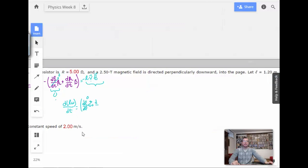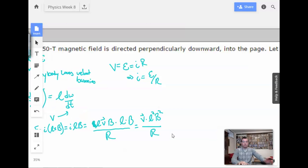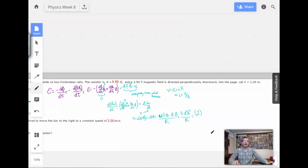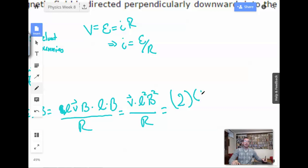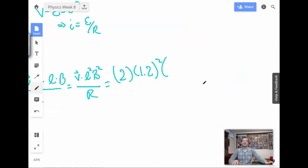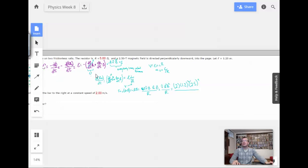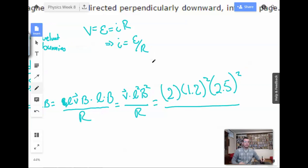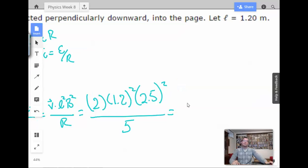Alright, so calculate the force applied. 2 meters per second. So now we're just going to plug stuff in. So here, this is going to be 2 meters per second. Check. L, 1.2. 1.2 squared. Magnetic field is 2.5. So we'll have 2.5 squared. Make it better squared. And then we have R which is 5.